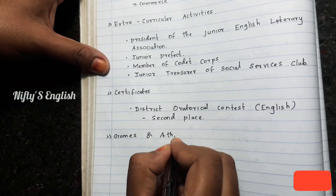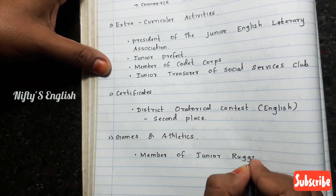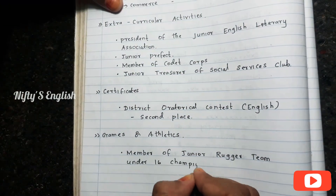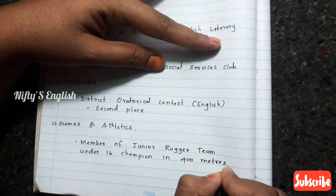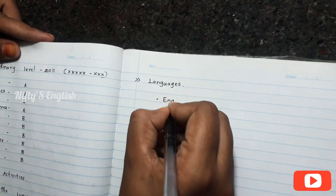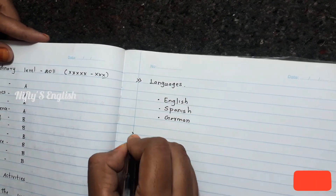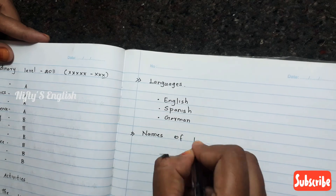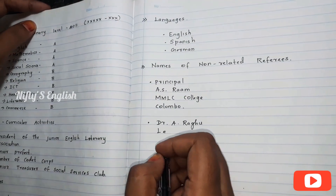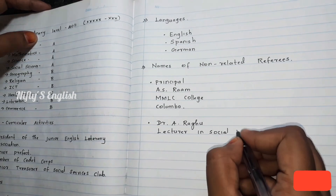For certificates: District Oratory Contest — English, second place. For games and athletics: Member of the Junior Record Team, Under-16 Champion in 400 meters. Languages: English, Spanish, and German. After that, I put the names of two non-related references.